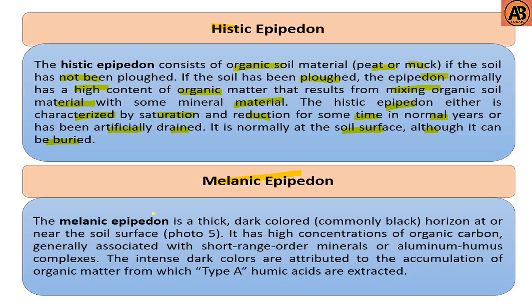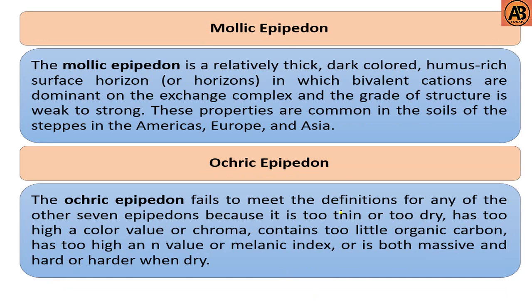The next one is the melanic epipedon. The melanic epipedon is a thick, dark-colored — commonly black — horizon at or near the soil surface. It has a high concentration of organic carbon, generally associated with short-range-order minerals and aluminum-humus complexes. The intense dark colors are attributed to the accumulation of organic matter from which type-A humic acids are extracted.